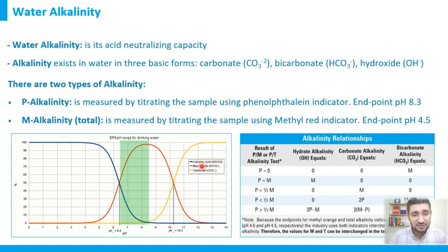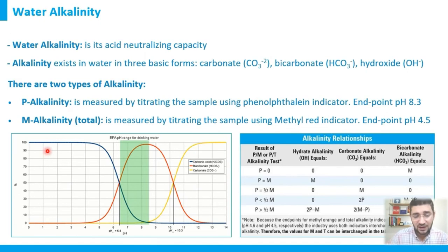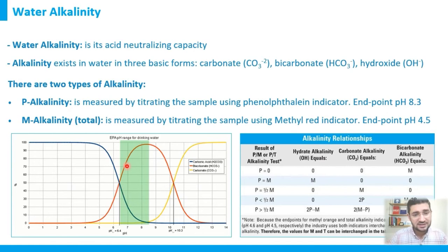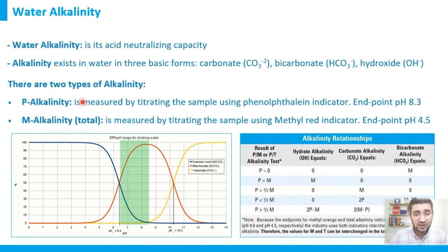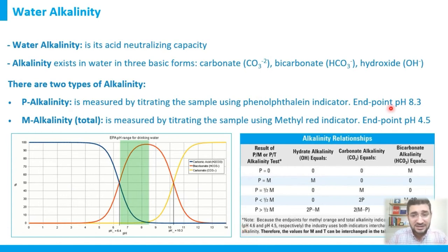Keep in mind that carbonate speciation depends on water pH. In acidic conditions, carbonic acid (CO₂) dominates. In neutral water systems like drinking water, you have a mix of carbonic acid and bicarbonate, and when pH exceeds 8.3, carbonate also appears. This graph is directly connected to water pH.